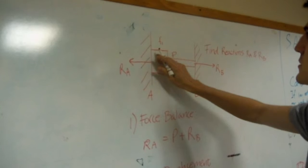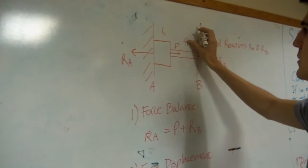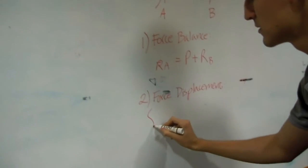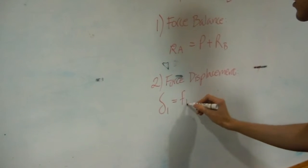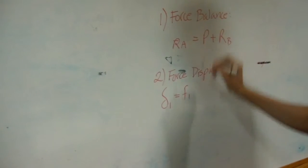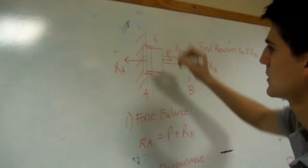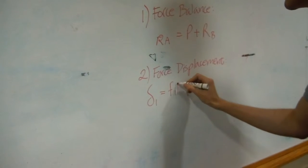This block has flexibility 1, this rod has flexibility 2. Delta 1 equals, I mean, we're analyzing this part. Sigma 1 equals flexibility 1 times Ra.